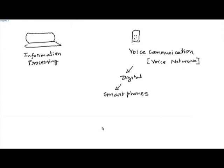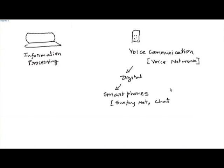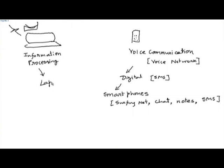Smart phones can not only be used for voice communication but also for surfing the net, chat, limited information processing such as creating and exchanging notes, and of course SMS, which is text-based messaging. SMS actually happened right at the beginning of this evolution. Meanwhile, the desktop world connected at the backend through a network to large servers has now evolved into laptops and networks.